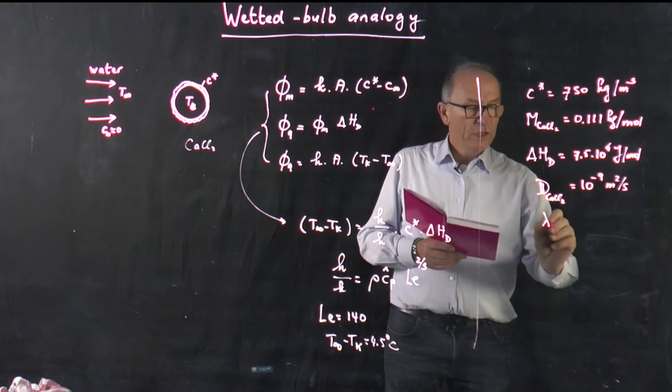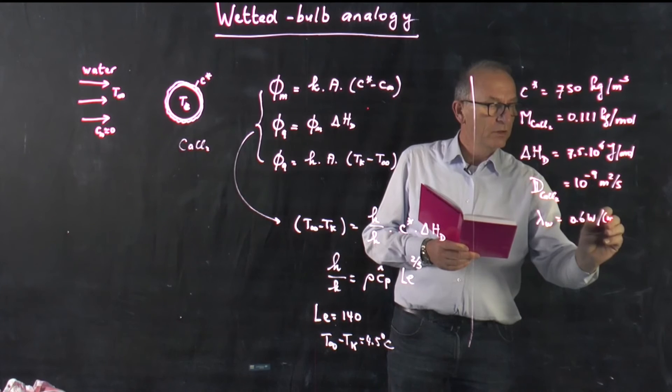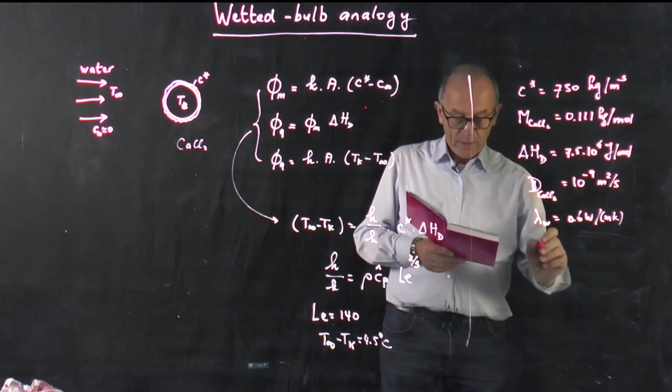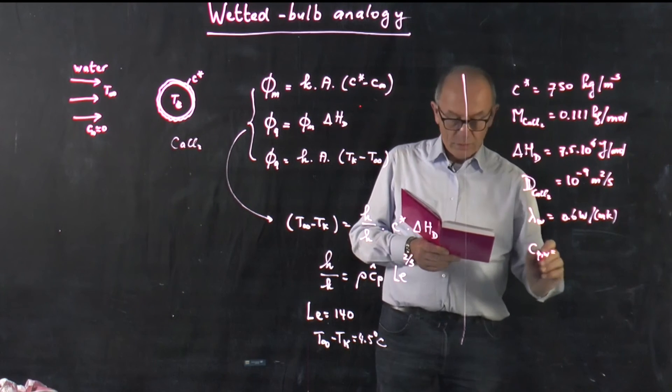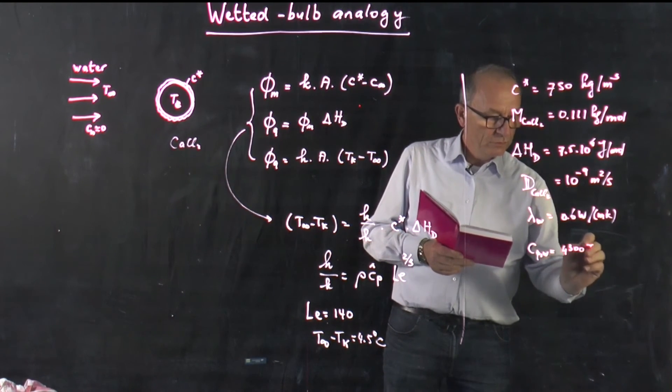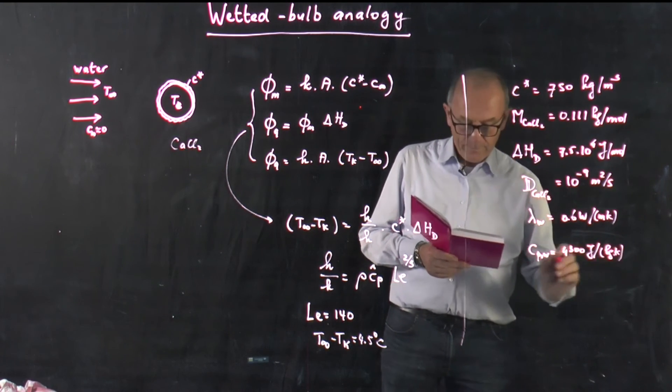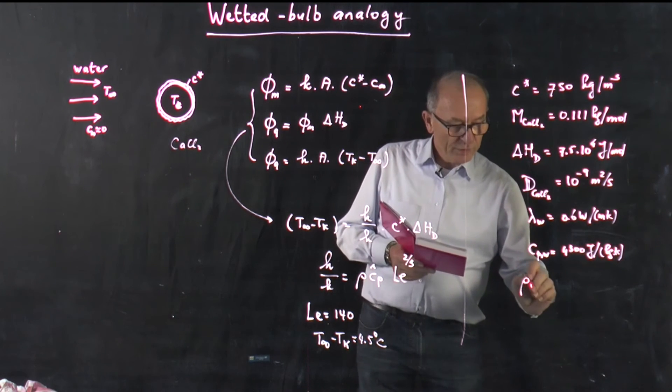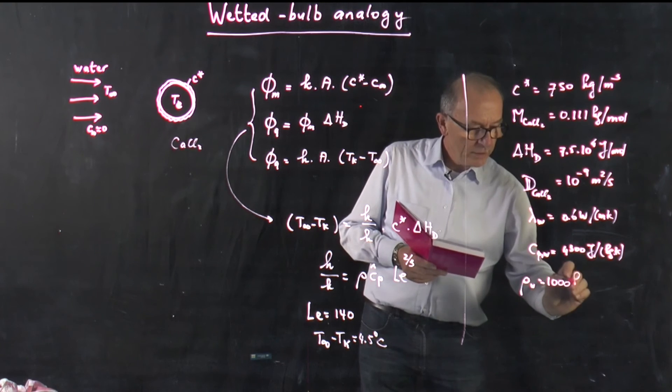I used lambda water which was 0.6 watt per meter per Kelvin. I used the Cp value of water which was 4300 joules per kilogram per Kelvin. I took a density of water which was equal to 1000 kilograms per cubic meter.